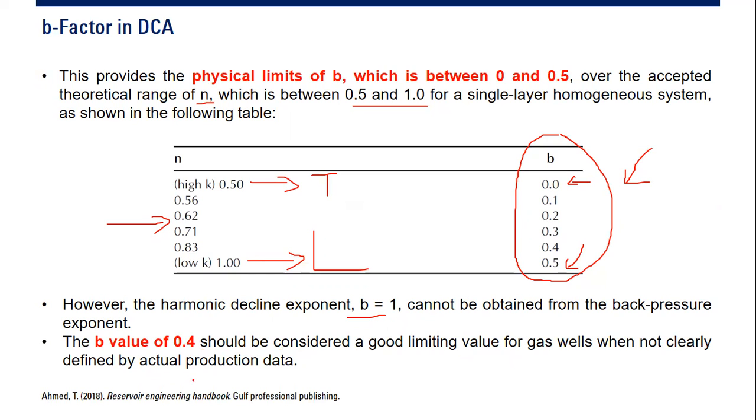If you cannot conclusively determine the b value, a good starting point and limiting value for you to use is b equals 0.4. That's the practical way for us to use b-factor and n exponent to put into our back pressure calculation.